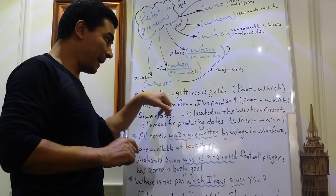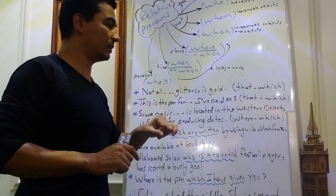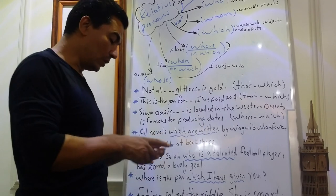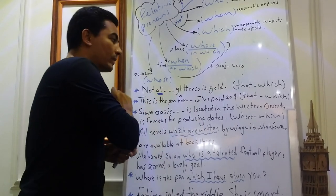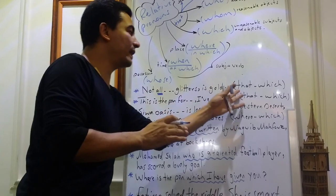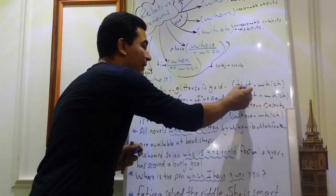Not all that glitters is gold. Shall we use that or which? Of course, if we look to the sentence, we have all. So we have to choose between that and which. Because of all, we will choose that.